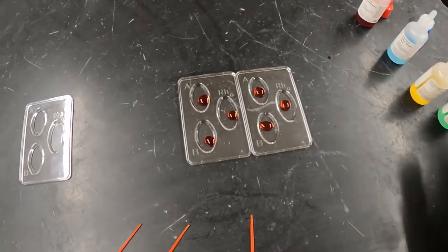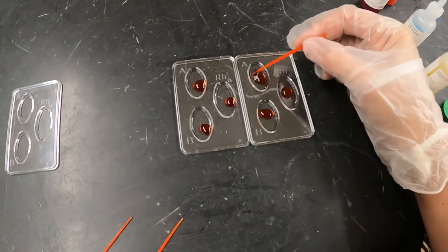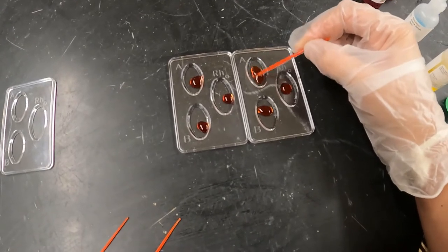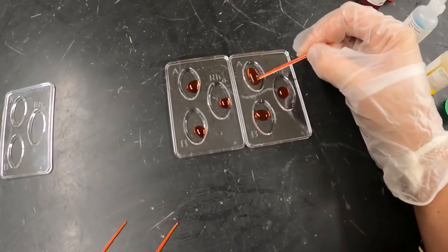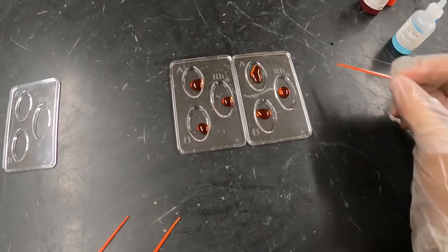And then you're going to use a separate toothpick for each of them to mix. And the idea is that if it starts to coagulate or mix together, you might see a color change, you might see it start to clot up, and that's what we're looking for. So I'm going to mix for a few seconds for A.